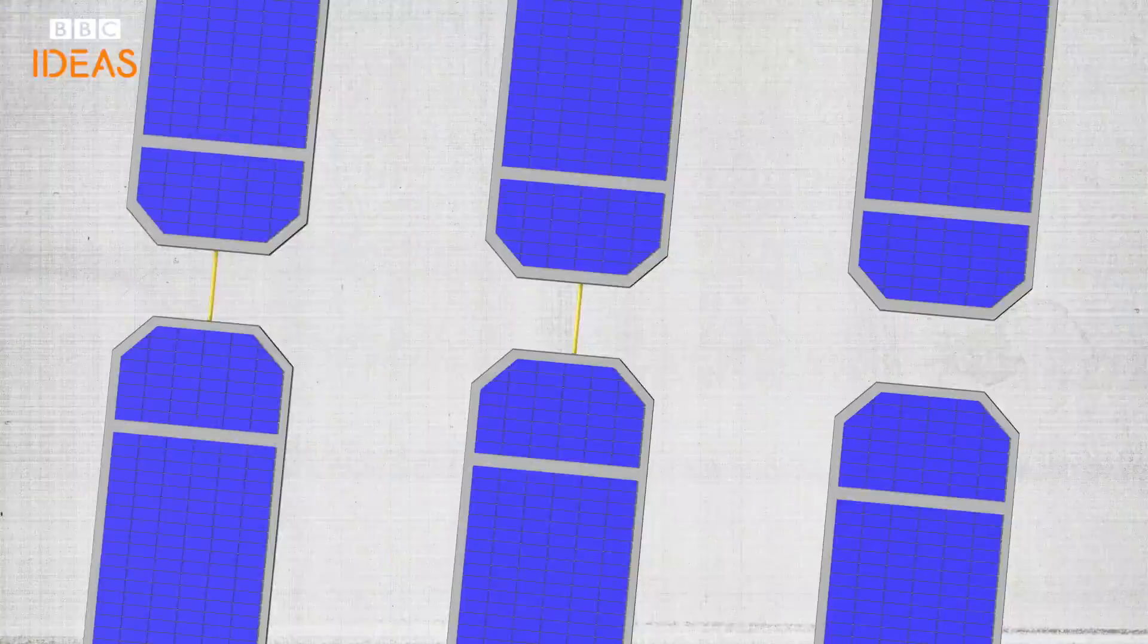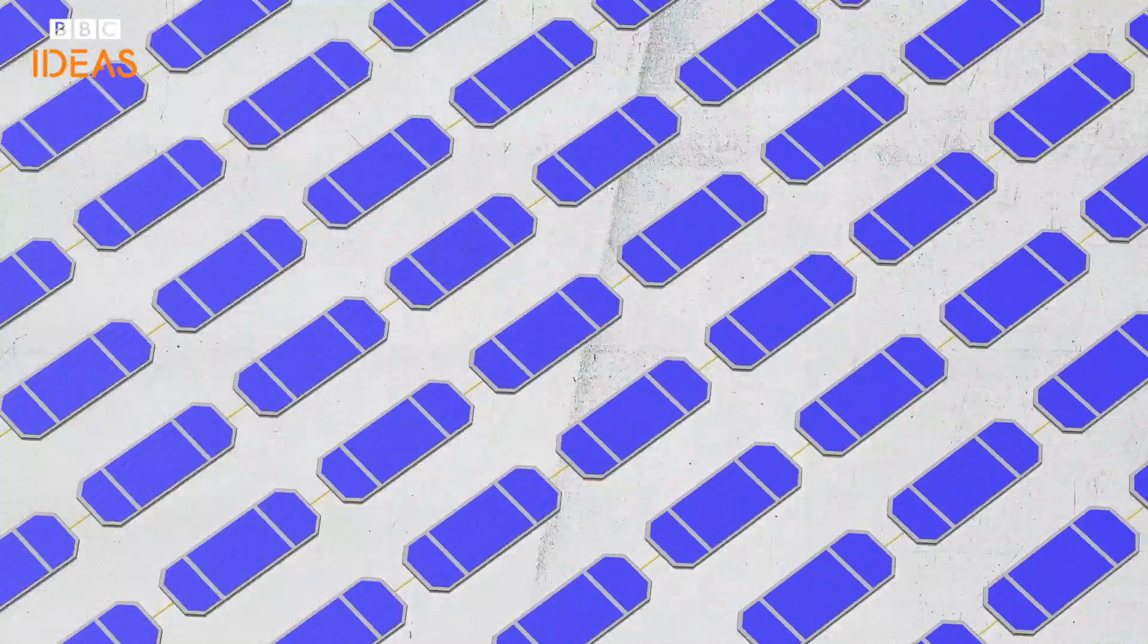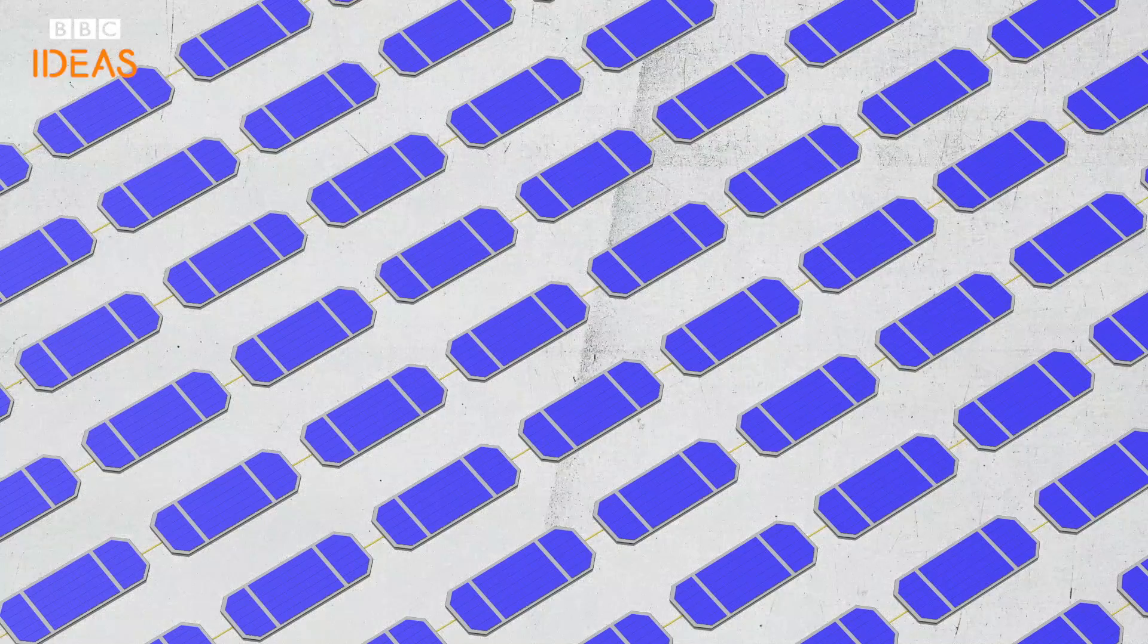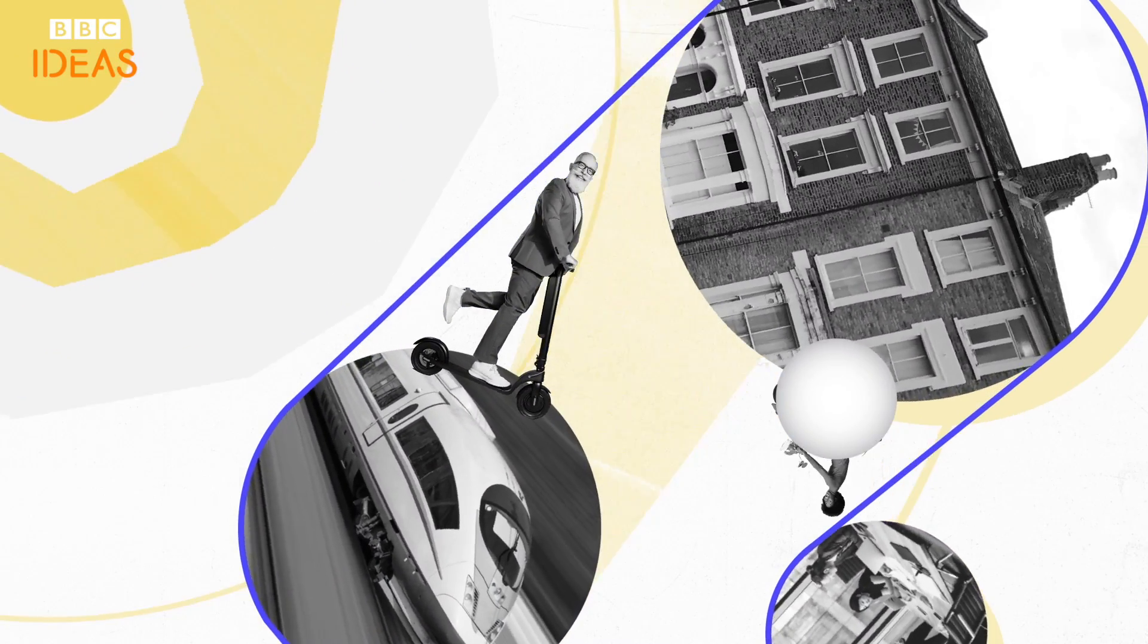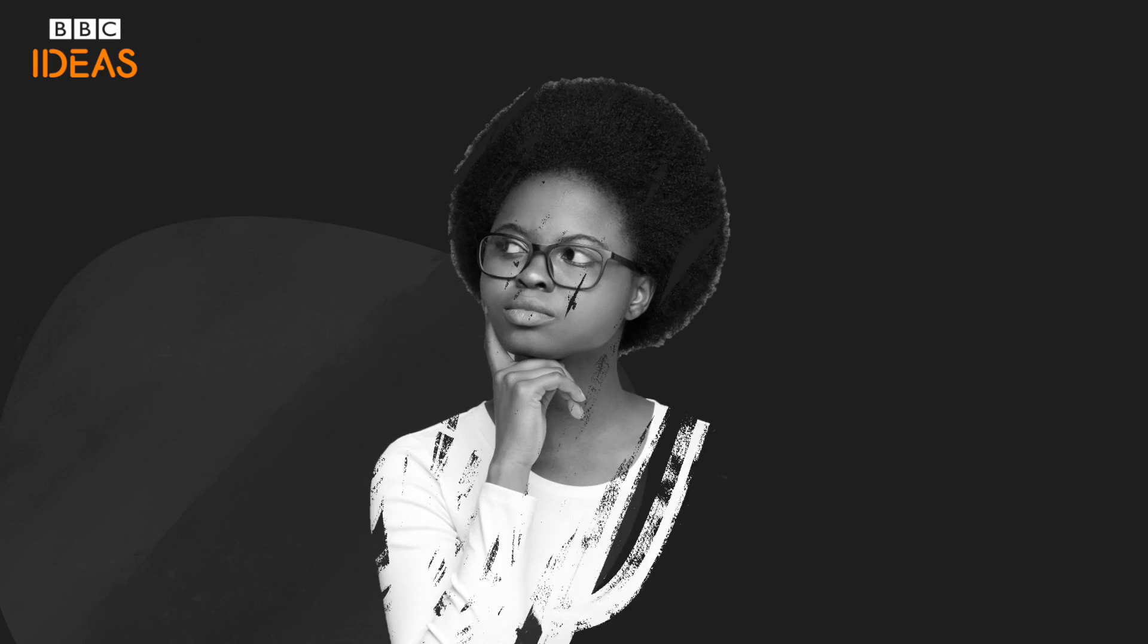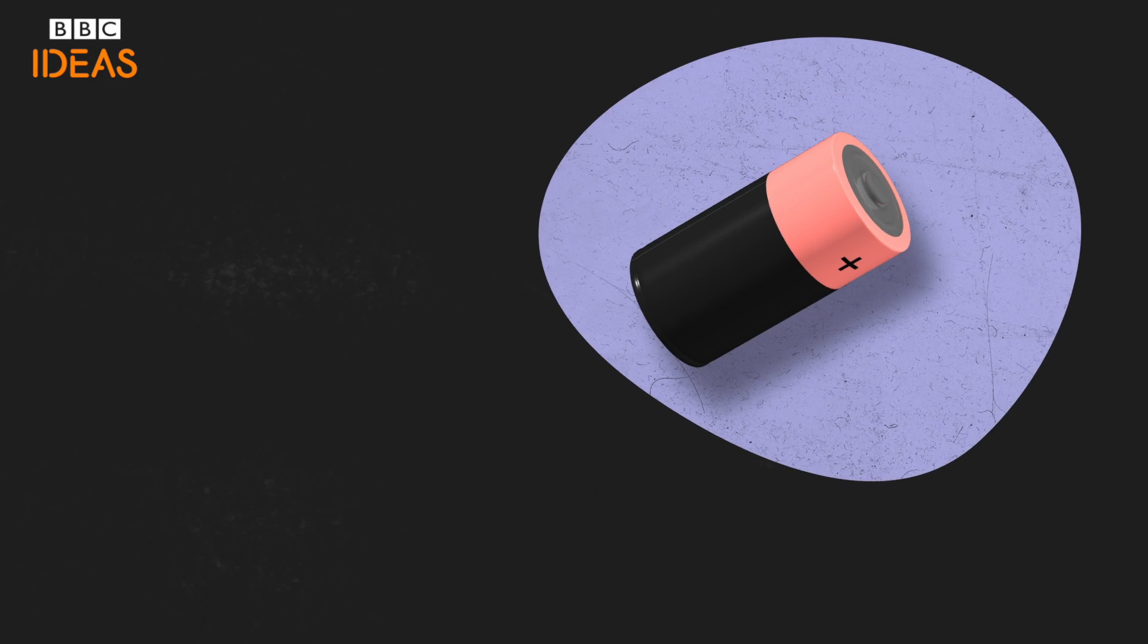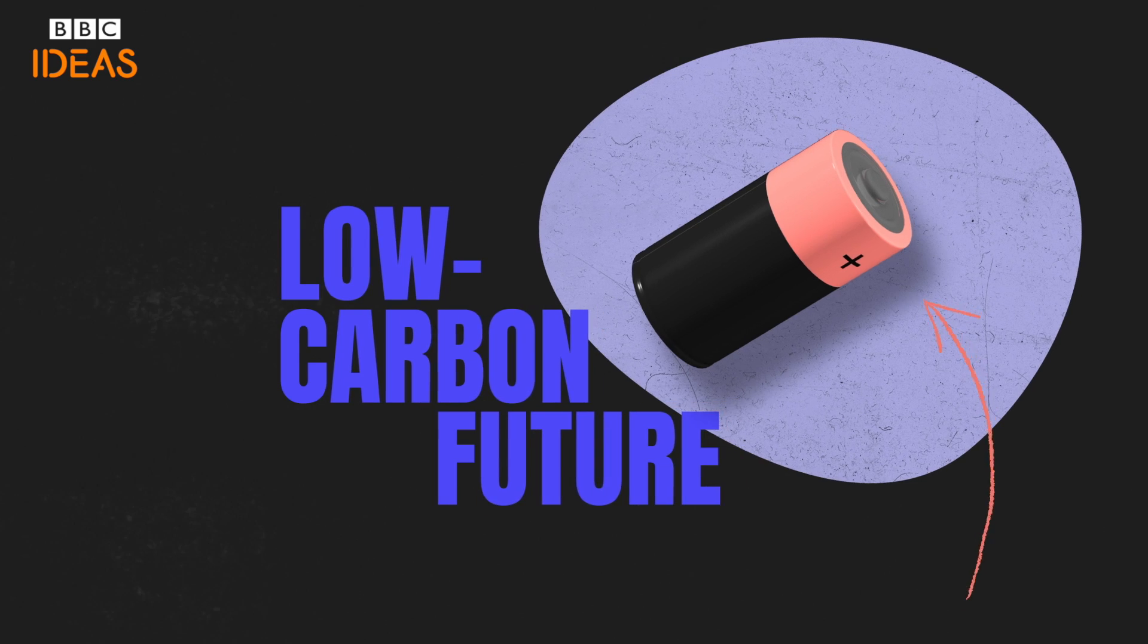Tech billionaire Elon Musk famously said that if the world had a hundred gigafactories everything from our homes to transport to businesses could run on solar. We'll need to wait to see if this happens but there's no doubt that batteries are central to a low carbon future.